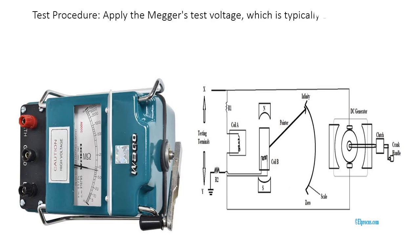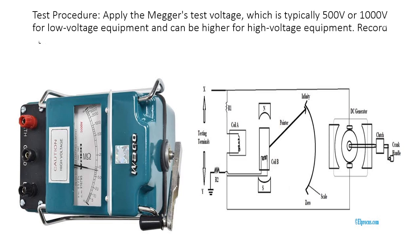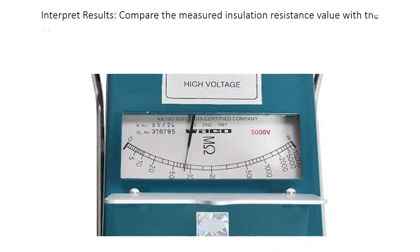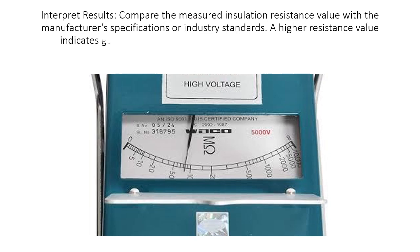Test Procedure: Apply the mega's test voltage, which is typically 500V or 1000V for low voltage equipment and can be higher for high voltage equipment. Record the insulation resistance value displayed on the mega after the test stabilizes, usually after one minute.